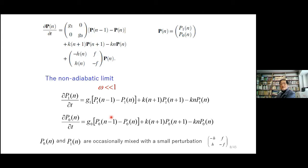The other limit is the non-adiabatic limit — the small omega limit. When transitions between states 0 and 1 are infrequent, the problem decouples to two one-dimensional problems, and again it is easy to solve these equations.